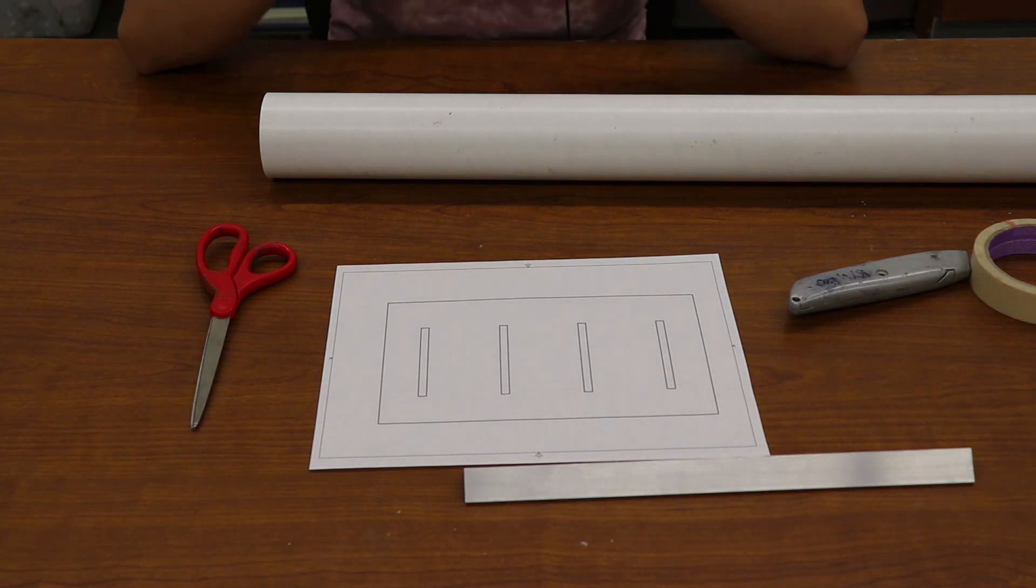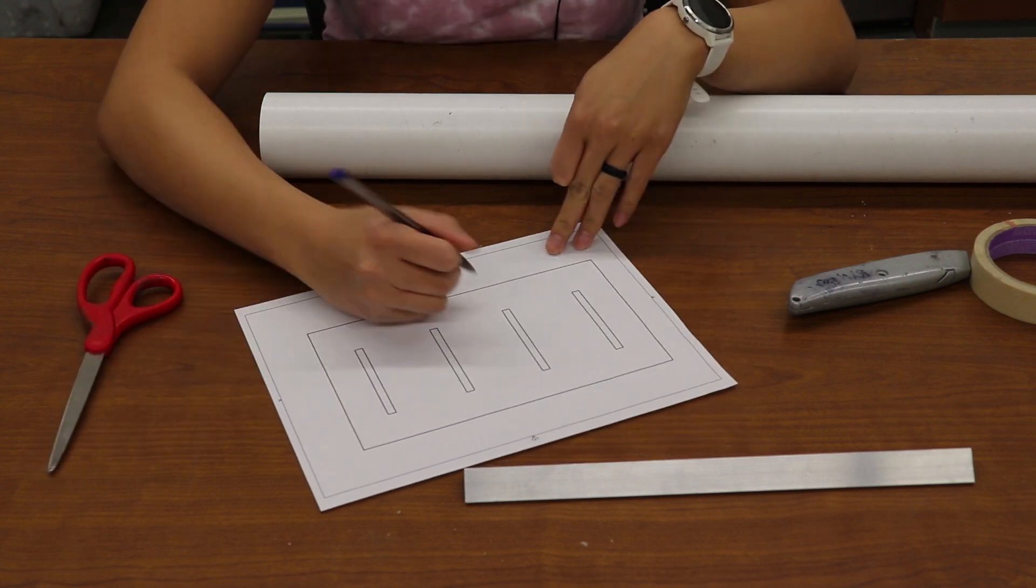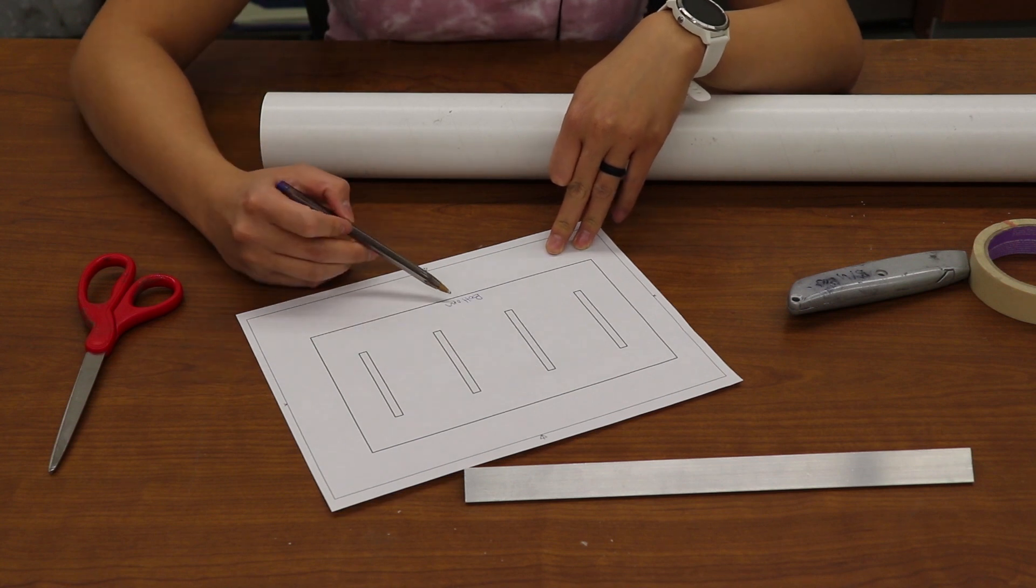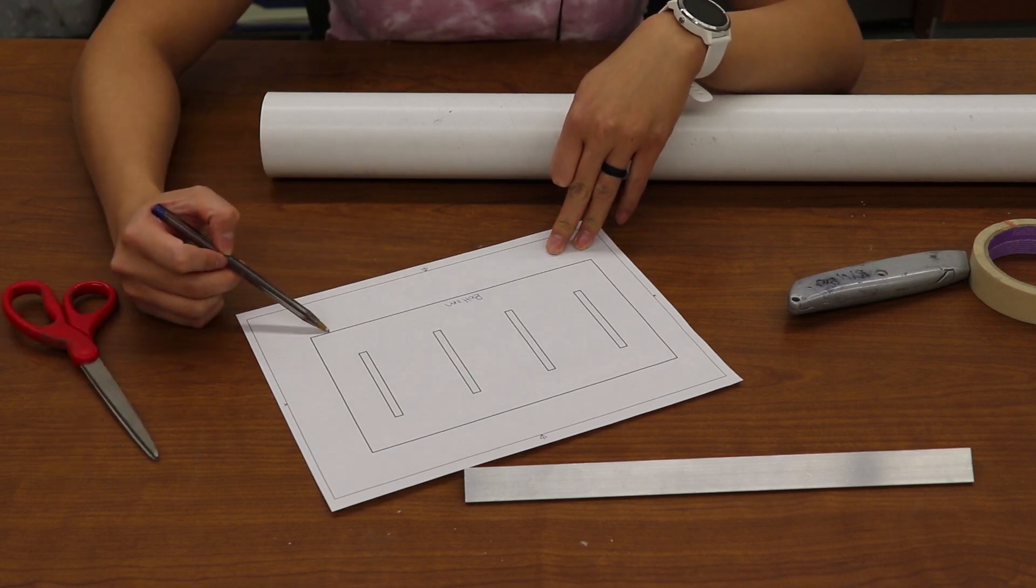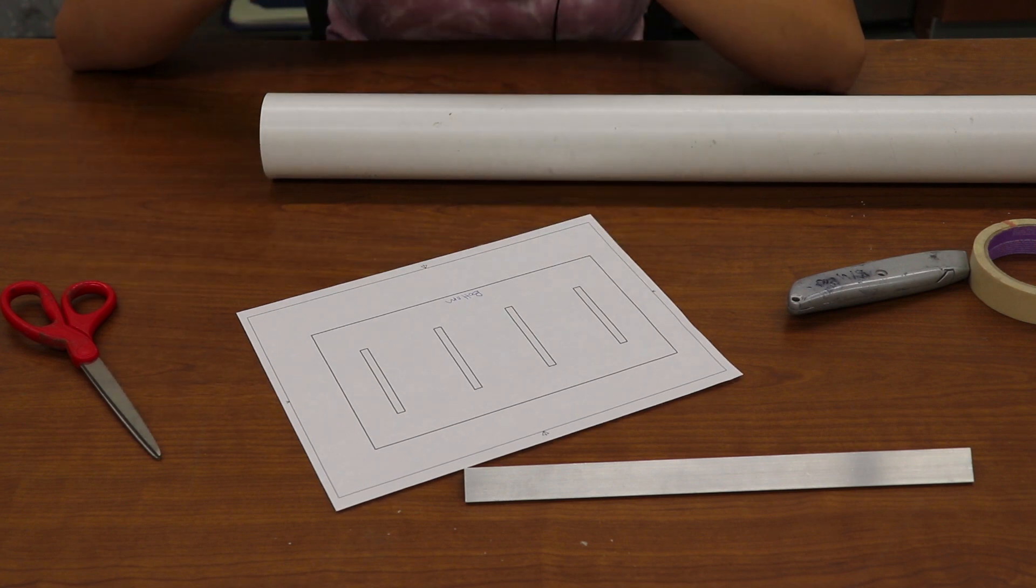If you guys remember from the previous video, we created fin slot drawings so that we can cut out our fin slots and glue our fins in. So what I'm going to do first is label the bottom of the fin slot drawing so that I can line it up with the bottom of the body tube once I cut it out.